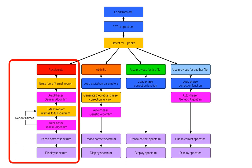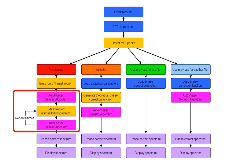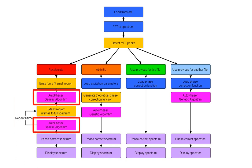The first of these routes is known as Recalculate. If you process your spectrum by this route, Autovectus will attempt to generate the phase correction function based only on the data in the spectrum itself. It does this by brute force fitting a phase correction function over a small region in the spectrum and then extending this out several times to cover the whole spectrum, using a machine learning method to optimize the phase correction function at each stage.